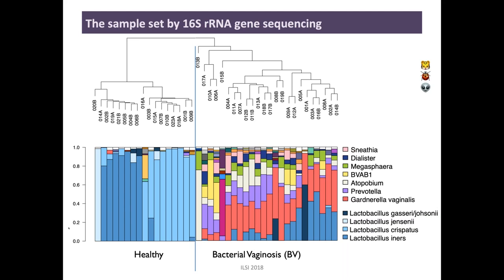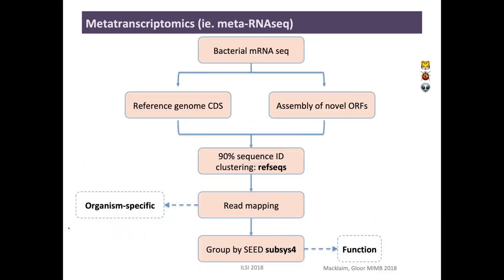This is our sample set by 16S rRNA gene sequencing. On the left are the healthy samples — each bar is a person or a sample, each color is a different taxon. We can see that the healthy samples have two different types of lactobacilli and they separate very cleanly by 16S. The BV samples look like a mixed bag. The received wisdom in the field from high-throughput sequencing is that there are three or four different kinds of healthy states depending on the dominant lactobacillus, but BV is just this mixed bag. I'm going to try and show you that's not the case.